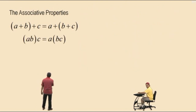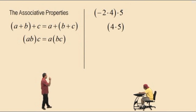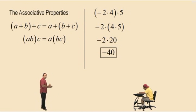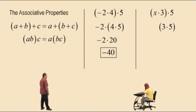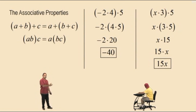The associative property for multiplication states the quantity a times b times c equals a times the quantity b times c. Example: negative 2 times 4 times 5 — we can apply the associative property and multiply 4 times 5 first: 4 times 5 is 20, and negative 2 times 20 is negative 40. For x times 3 times 5, let's multiply 3 times 5 first — that's 15. Then x times 15, by the commutative property, is 15 times x, which we write as 15x.